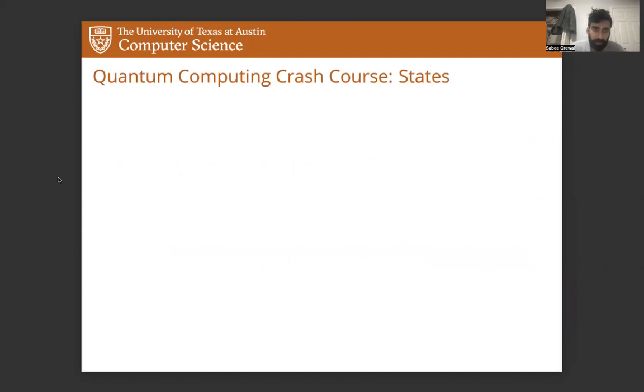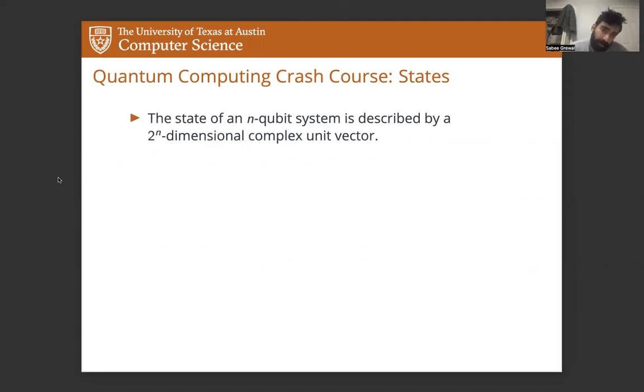We're going to start with a little background in quantum computing and quantum information. The way we describe the state of an n-qubit system is with a 2 to the n-dimensional complex unit vector. This might be a familiar way of writing such a vector. We have a vector v that's a combination of standard basis states. The norm is 1 since it's a unit vector and the coefficients are complex.